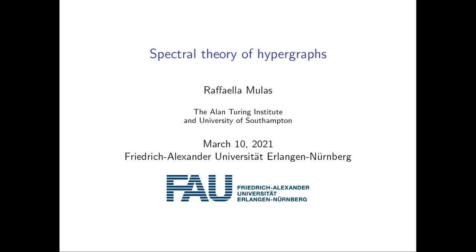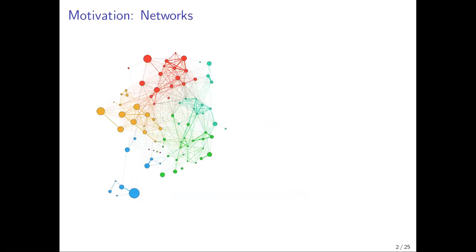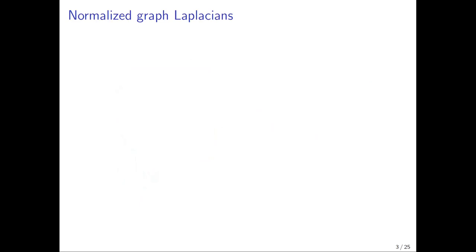I will start with a brief introduction on the graph case before talking about the general spectral theory of hypergraphs. The motivation for studying spectral graph theory comes from networks, because graphs can model many empirical networks, and the spectrum of any operator associated to a graph — such as the adjacency matrix or the Kirchhoff Laplacian — encodes important qualitative properties of the graph. I will focus on the normalized Laplacian.